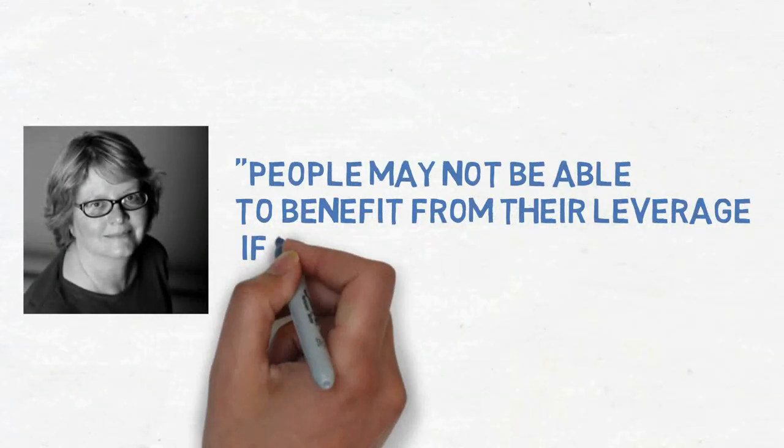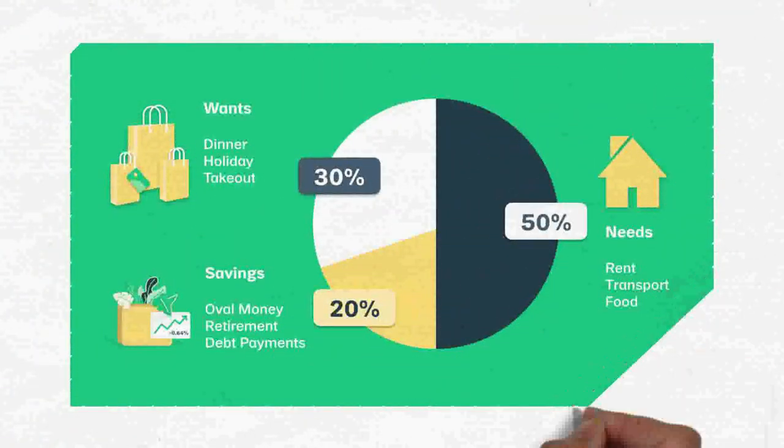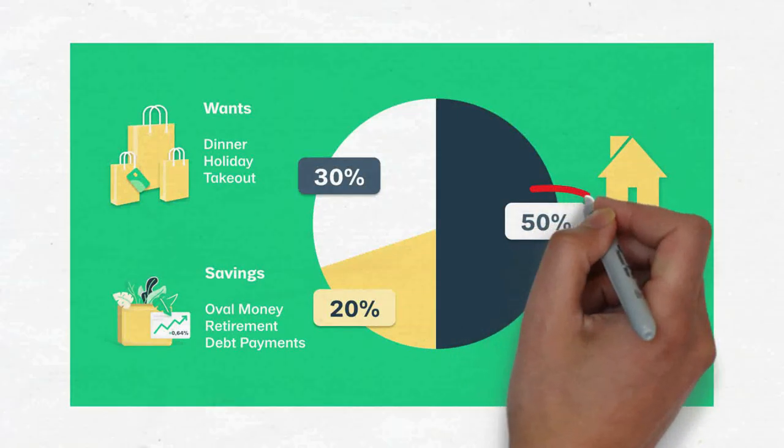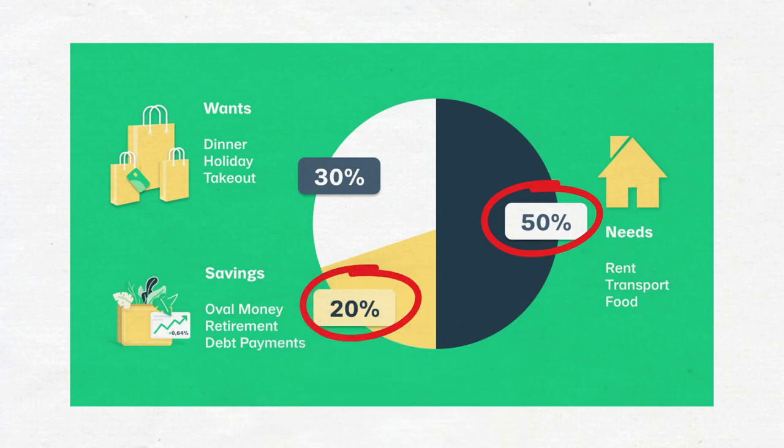Finance expert Donna Friedman stated that people may not be able to benefit from their leverage if they're unaware of where their money is going. However, there are many ways for you to cut yourself off from the loop. A good example of a budgetary guideline is the 50-30-20 rule, which states that you should spend 50% of your after-tax income on necessities, 20% on savings, and 30% on preferences.